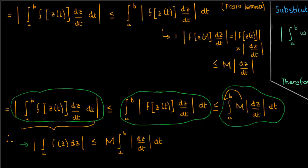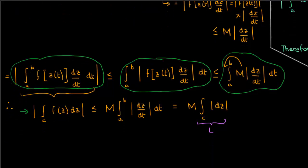Finally, if we change back the variables of integration from t to z, the integral of |dz/dt| dt over t can be rewritten as the integral of |dz| over the contour c — but that's just the arc length of c, which we call l. Therefore, the magnitude of the contour integral of f of z is less than or equal to the upper bound m times the contour length l, and that proves the ML inequality.